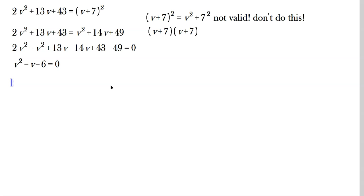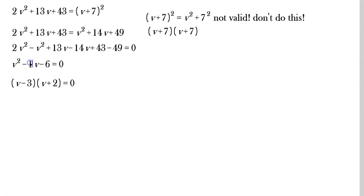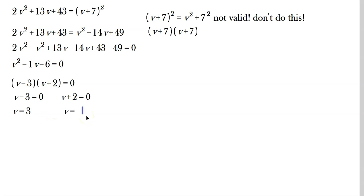Try to find two numbers for factoring: negative 3 times 2 is negative 6, and negative 3 plus 2 is negative 1, matching the coefficient. So factor as (v minus 3)(v plus 2) equals 0. Set each factor to 0: v minus 3 equals 0, or v plus 2 equals 0. So v equals 3 or v equals negative 2.